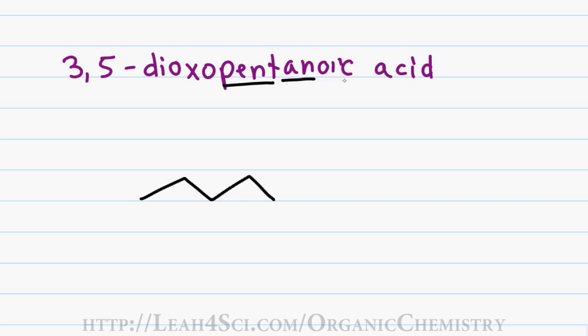Since my suffix is oic acid, I know that I have a carboxyl functional group on carbon number 1, and I can draw this on the right or the left. Once I determine where the carboxyl group is situated, I number starting from that side. I have 2 oxo substituents located on carbon 3 and carbon 5, so I'll simply add a double bond O and see where that shows up.